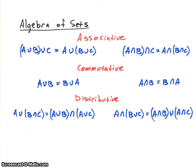But there are some operators that don't have this property. For instance, the division operator: one divided by two is not the same as two divided by one. So we have to make sure that we define these properties specifically.